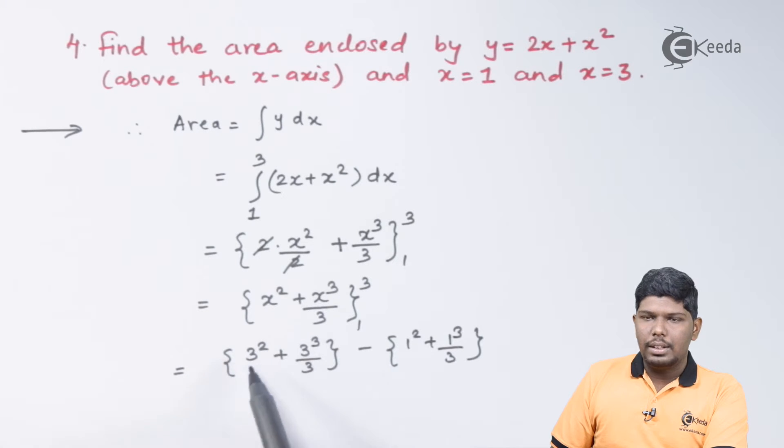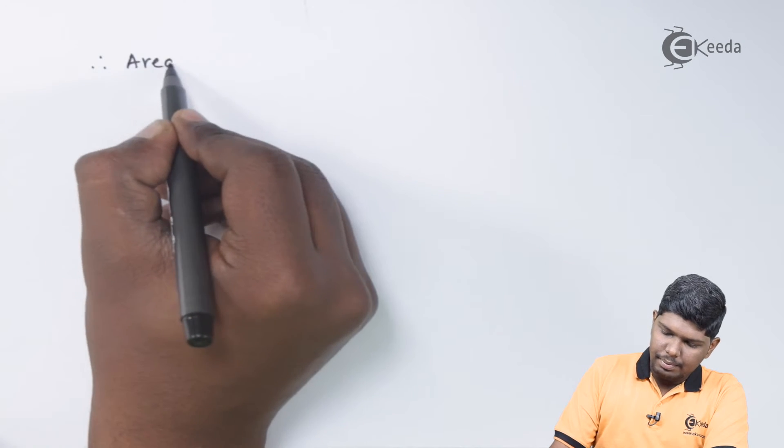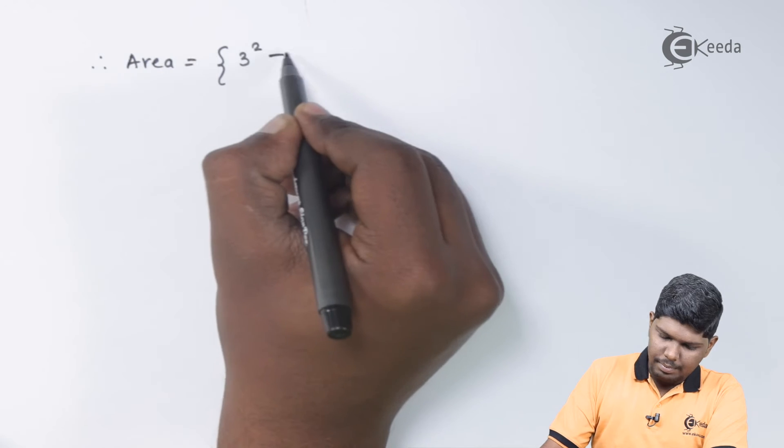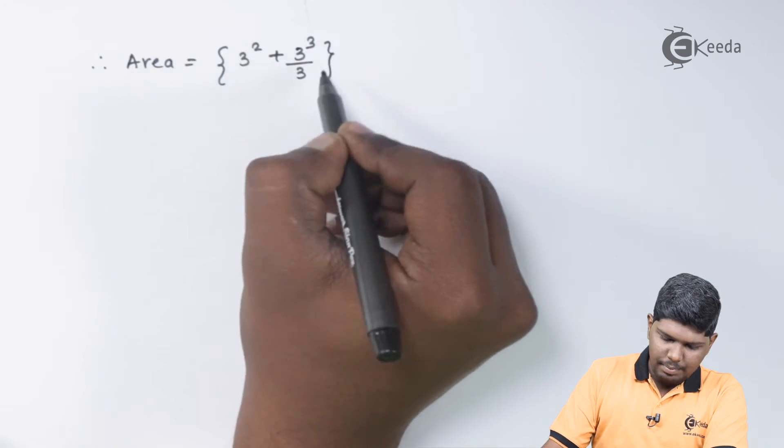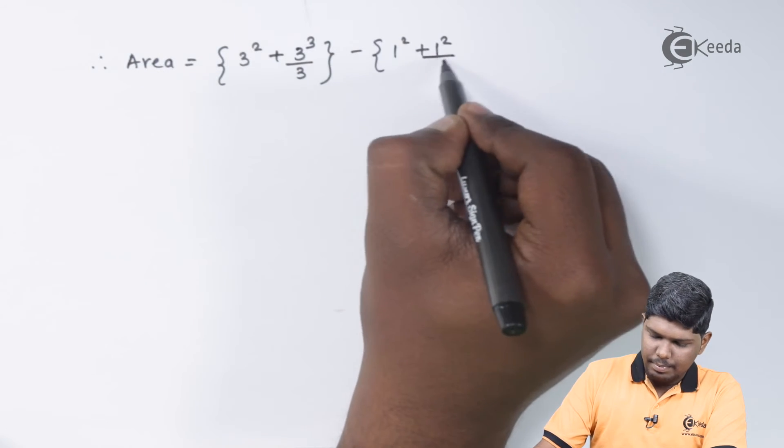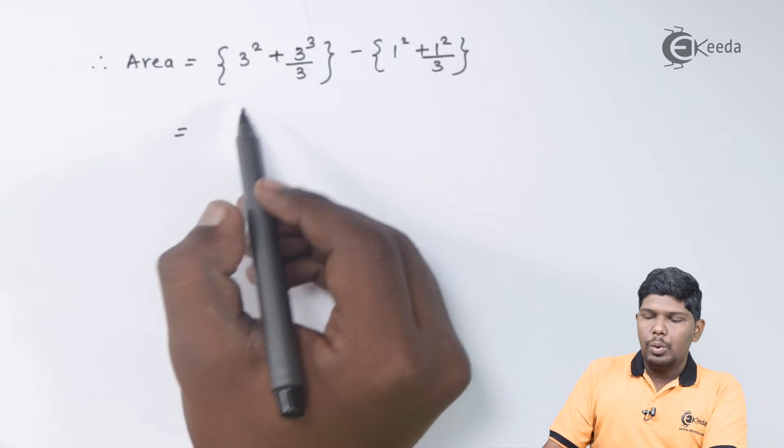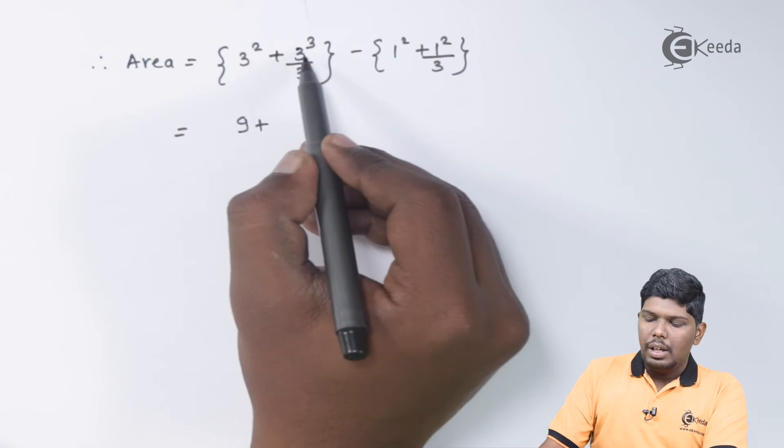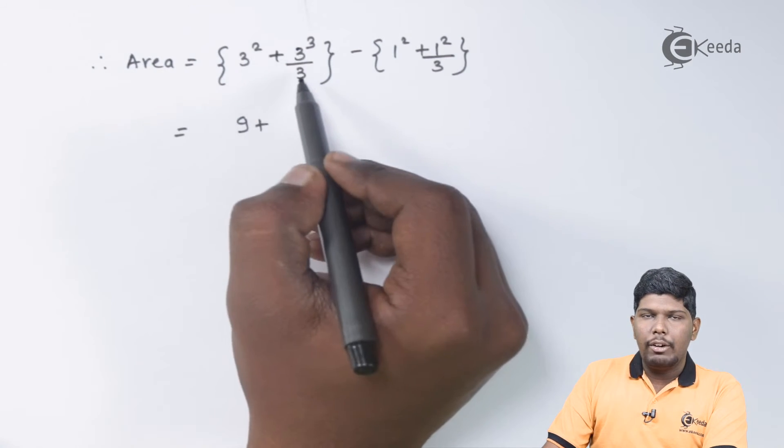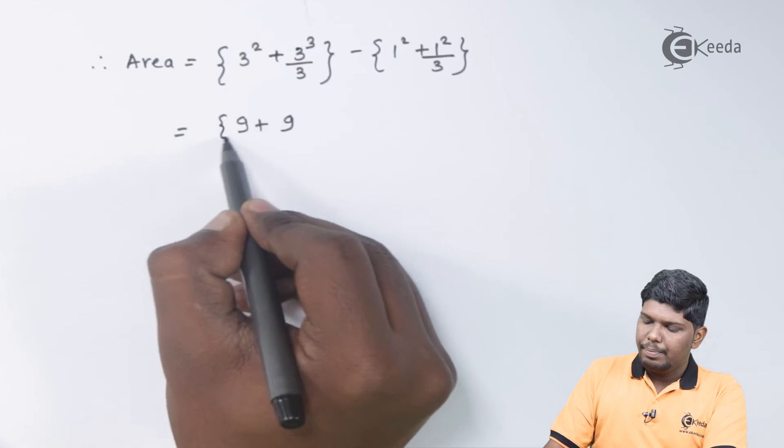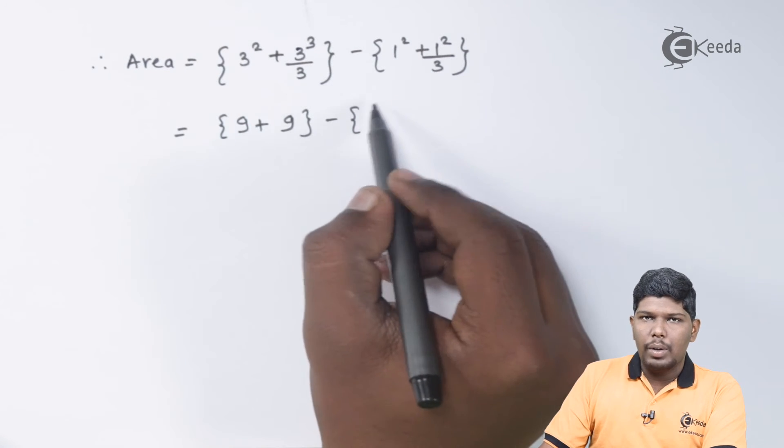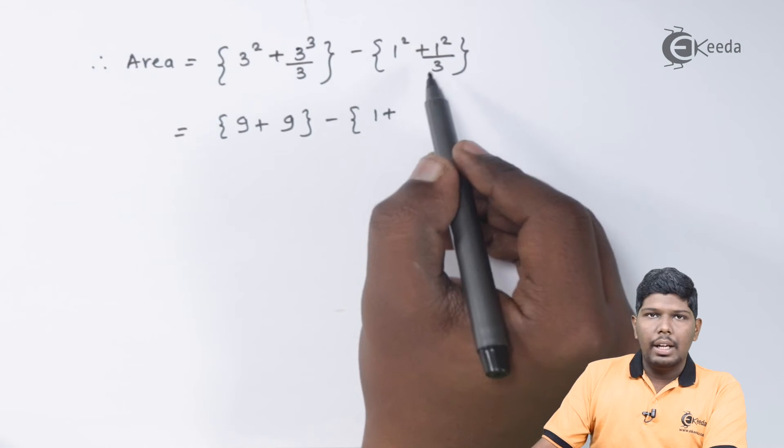This will give you 3 square plus 3 cube by 3 minus 1 square plus 1 cube by 3. 3 square will give you 9, 3 cube is 27, 27 upon 3 will again give you 9. 1 square is 1, and again we have 1 by 3.